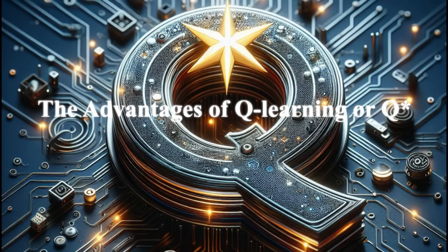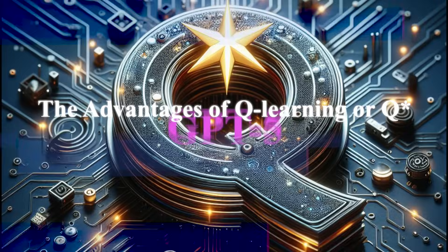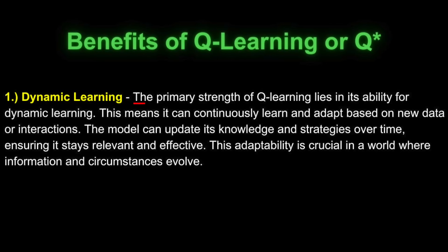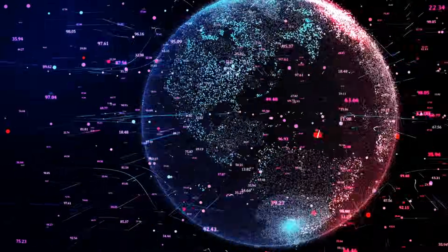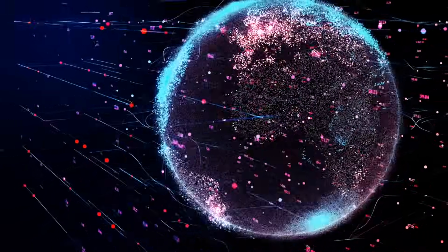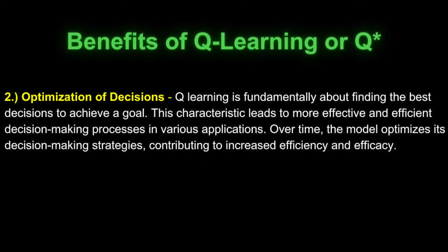Now let's explore the advantages of Q-learning, or potential Q-star, which could be akin to GPT-5. First, dynamic learning: the primary strength of Q-learning lies in its ability to continuously learn and adapt based on new data or interactions, updating its knowledge and strategies over time to stay relevant and effective. Second, optimization of decisions: Q-learning is fundamentally about finding the best decision to achieve a goal, leading to more effective and efficient decision-making processes, with the model optimizing its strategies over time.